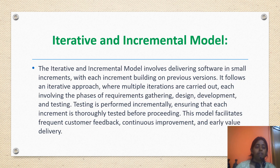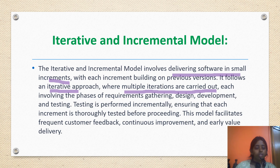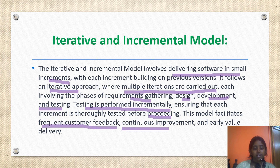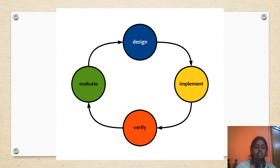In the next slide, we have the iterative and incremental model. The iterative and incremental model involves delivering software in small increments, with each increment building on the previous version. It follows an iterative approach where multiple iterations are carried out, each involving phases of requirement gathering, design, development and testing. Testing is performed incrementally, ensuring that each increment is thoroughly tested before proceeding. This model facilitates frequent customer feedback, continuous improvement and value delivery. The diagram shows four phases: design, implement, verify and evaluate.